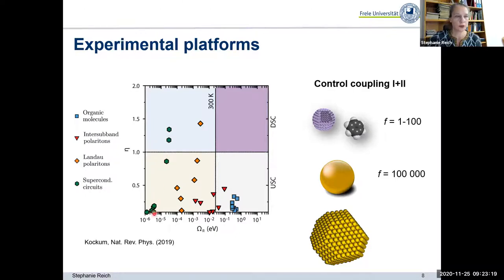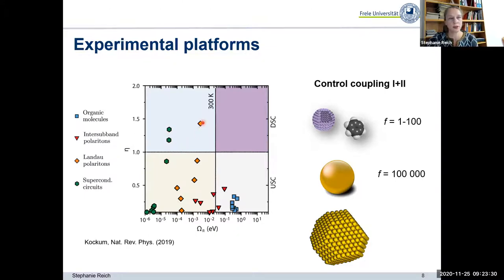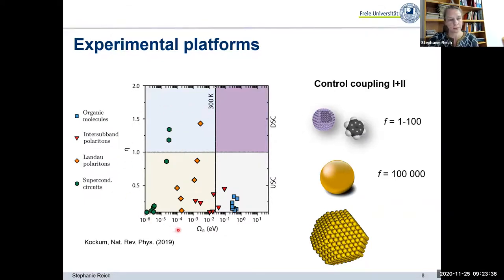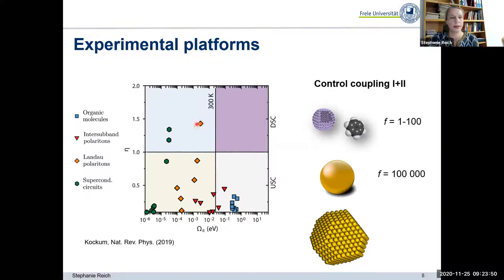Two other popular platforms are superconducting circuits and Landau polaritons — they're particularly nice for studying the physics of these systems. People have even managed to drive them into the deep-strong regime. But they have two shortcomings: the absolute value of the Rabi frequency is really low — micro-eV or milli-eV — much lower than thermal energy at room temperature. And you can only study these systems on their own; you cannot fill them with molecules, for example, to get ultra-strong coupling to a molecular system.